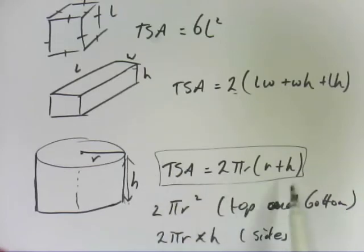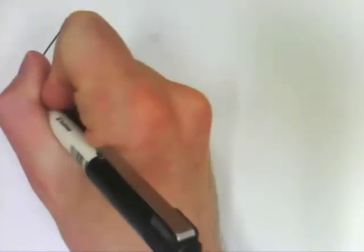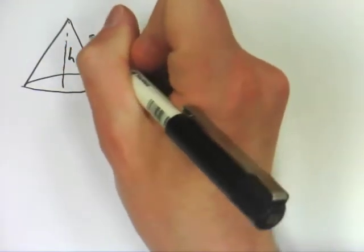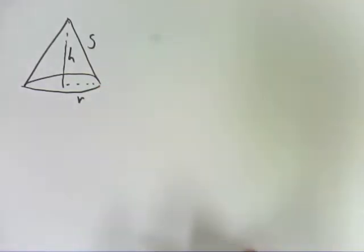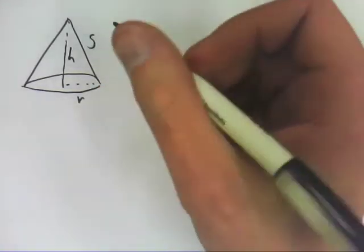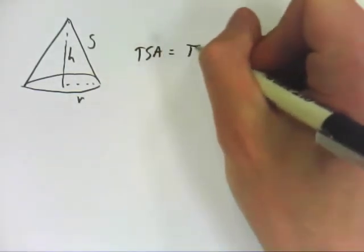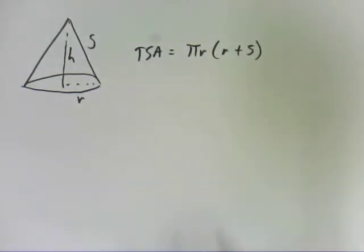The next shape is a cone, where you have the height, the slant, and the radius. Now, I've got no fancy way of explaining this to you myself, but the TSA of this is pi r times r plus s. So that's one you're just going to have to remember.